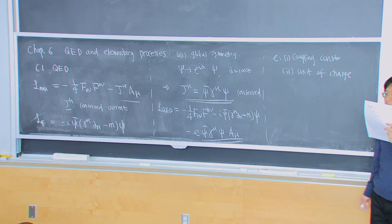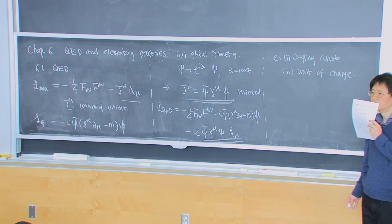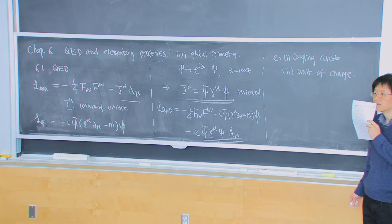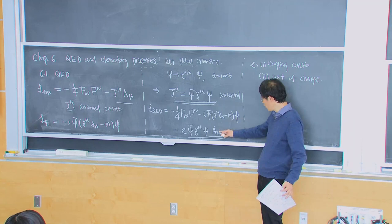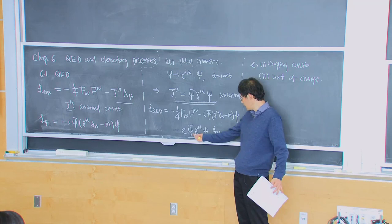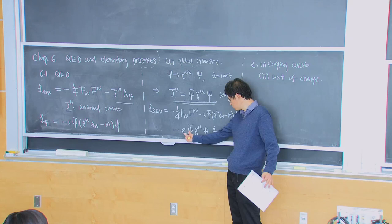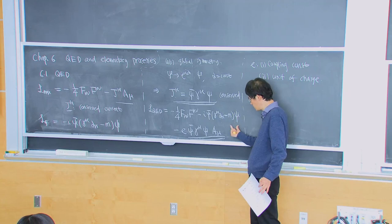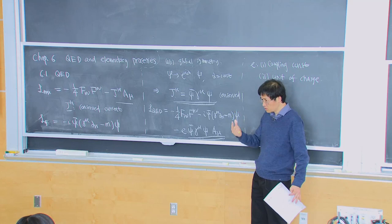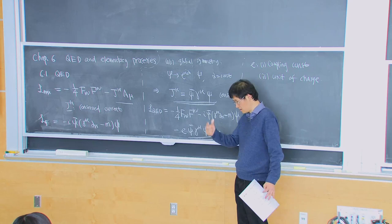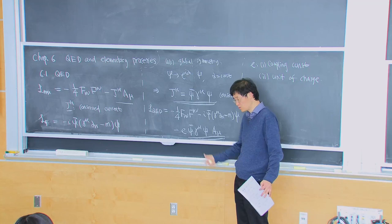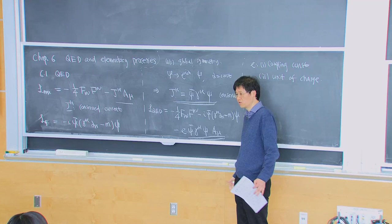Student: How come different particles have charges that are integer multiples of each other? You might think in this framework you can set the coupling constant to whatever you like. Instructor: That's right. In this framework, E can be arbitrary and different particles can have different charges. For example, the electron has charge E, but the muon could have a different E-tilde. It is a highly unusual feature that in nature the charge seems to be quantized — multiples of some fundamental charge. That cannot be explained using this framework; it requires some other framework, such as grand unified theory.